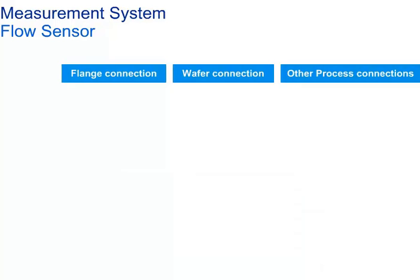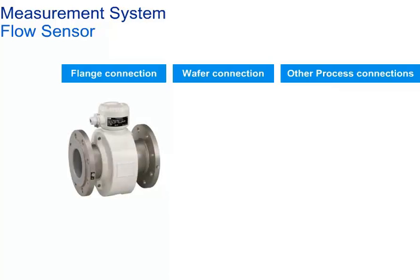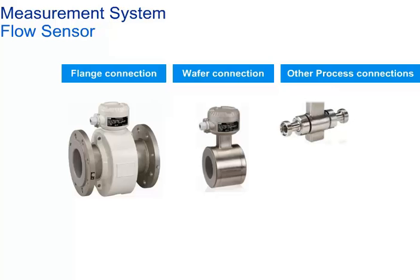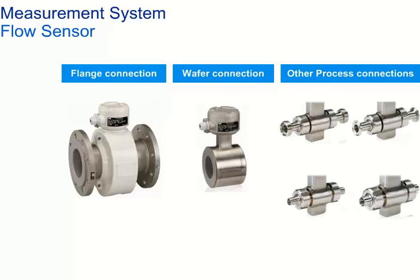Three different types of process connections can be found in the market. Flange type connection is the standard across major industries, available from DN10 to DN2400. Wafer type connection is a cost-effective alternative, available from DN10 to DN100. For hygienic applications, specific requirements such as cleanability or a gap-free transition from pipe to meter tube without crevices must be met — weld stubs, food industry fittings, male threads, or tri-clamps are used here.